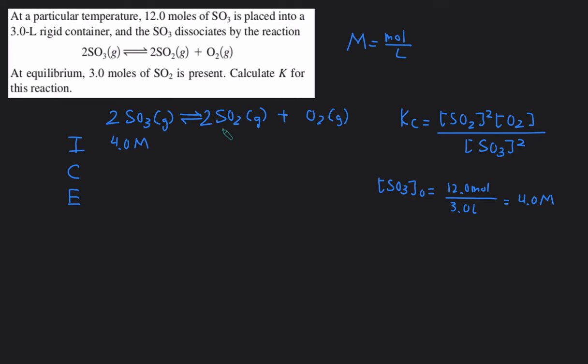The question doesn't mention anything about SO2 or O2 initially. So we can assume that we didn't have any products to start so this will be 0 molar and that'll be 0 molar. Once again, because we're starting with all reactants and no products, this reaction will proceed to the right. So then this will be minus 2x because of the coefficient of 2, this will be plus 2x and then this will be plus x.